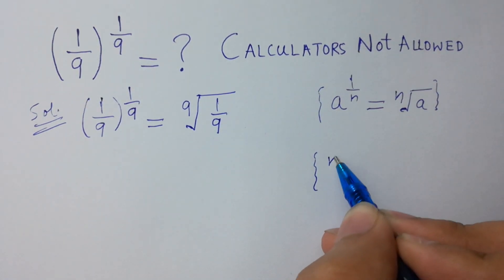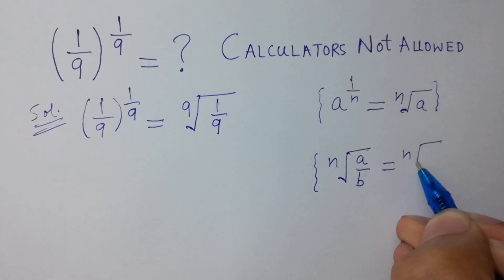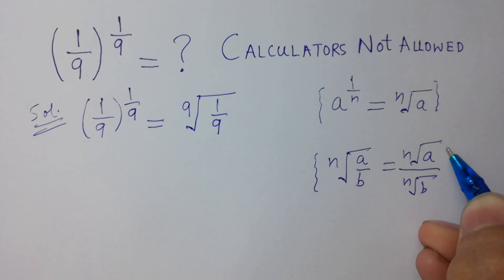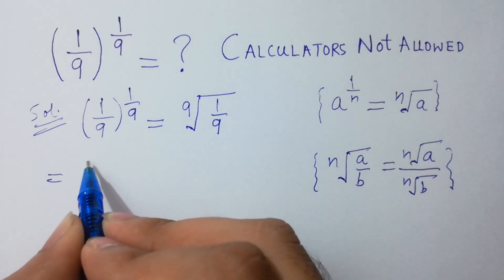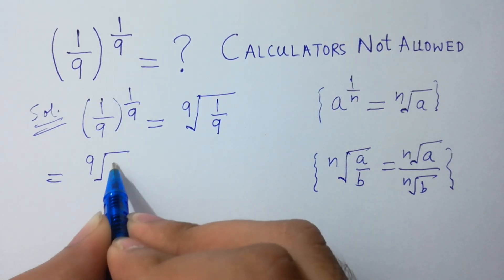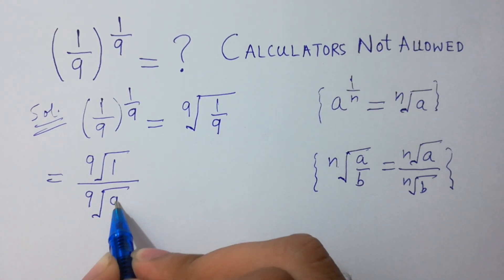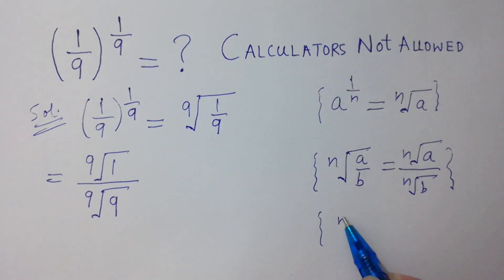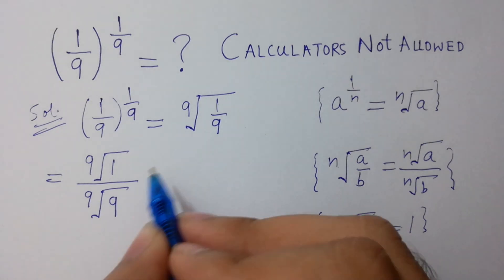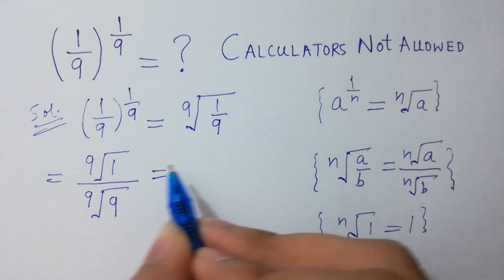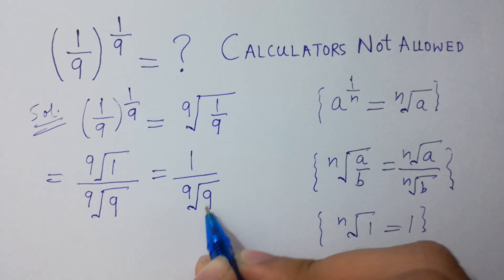Since n-th root of a over b equals n-th root of a over n-th root of b, so it will be equal to 9th root of 1 over 9th root of 9. And since n-th root of 1 equals 1, so 9th root of 1 is simply 1 over 9th root of 9.